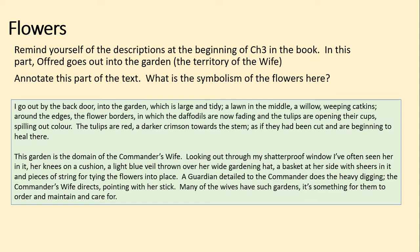She goes out by the back door — symbolic in itself — into the garden, which is 'large and tidy.' This really describes Serena Joy: large and tidy, a lawn in the middle. Look at the plants growing there. We have a willow — weeping catkins around the edge. The plant life here is symbolic of misery and depredation. A weeping willow has droopy, very long strands for its leaves, and weeping catkins droop downwards — the idea of weeping, looking like they're shedding tears.